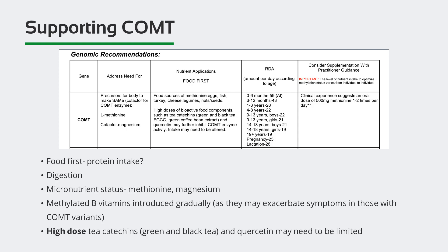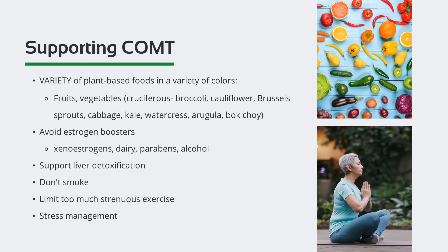Further inhibition of COMT activity may result from those, so intake may need to be adjusted. To further support COMT activity, a variety of plant-based foods and a variety of colors of fruit, vegetables, legumes, nuts and seeds, and whole grains is encouraged. Include plenty of cruciferous vegetables like broccoli, cauliflower, Brussels sprouts, cabbage, kale, watercress, arugula, and bok choy. It's best to avoid estrogen boosters, xenoestrogens, dairy, parabens, and alcohol, and nourish the body properly to support liver detoxification. Smoking is never a good idea, and too much strenuous exercise may need to be limited for patients having difficulty due to COMT.